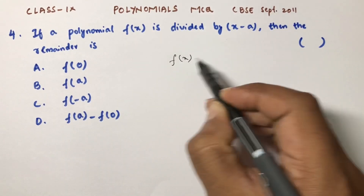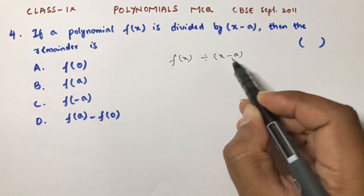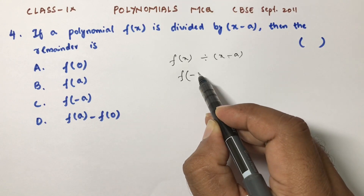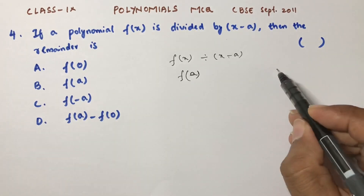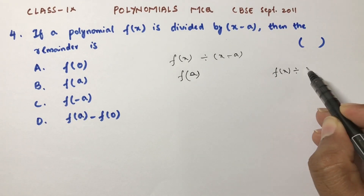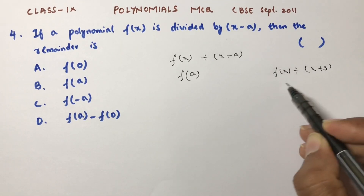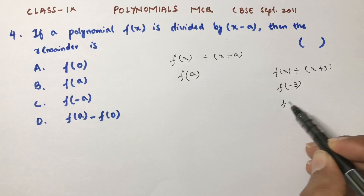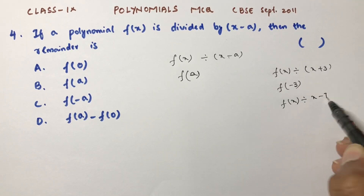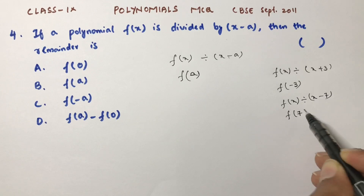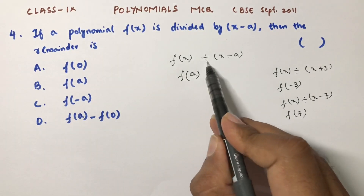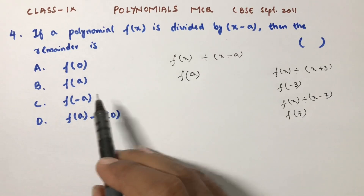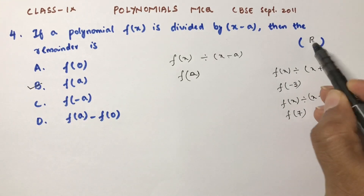If a polynomial f(x) is divided by (x - a), according to the remainder theorem the remainder is f(a). For example, if f(x) is divided by (x + 3), the remainder is f(-3); if divided by (x - 7), the remainder is f(7). So here, dividing by (x - a) gives remainder f(a). The correct option is B.